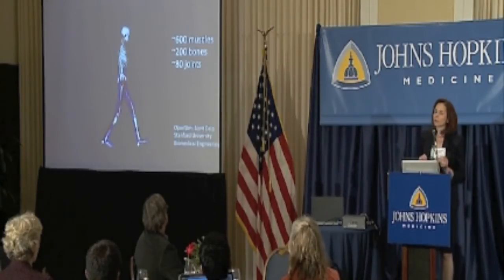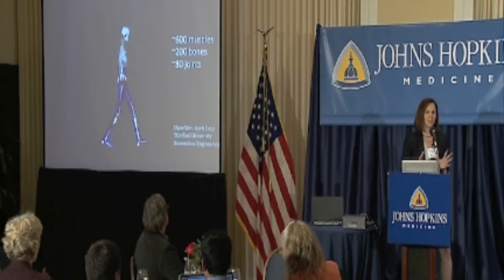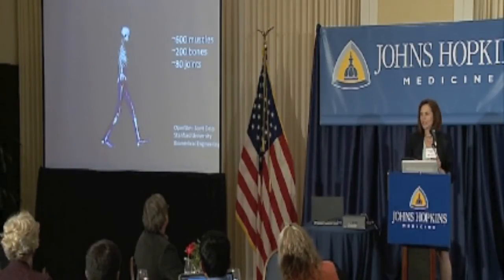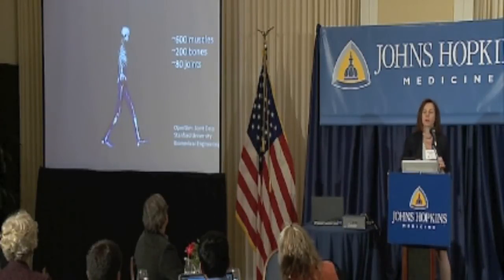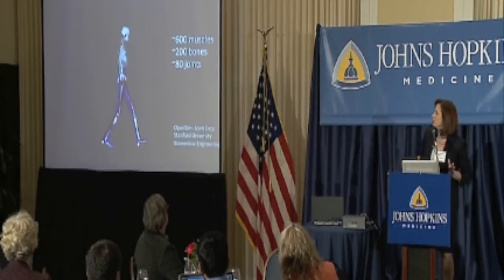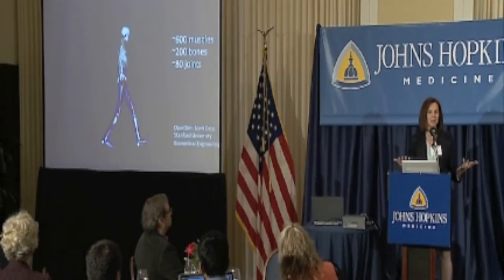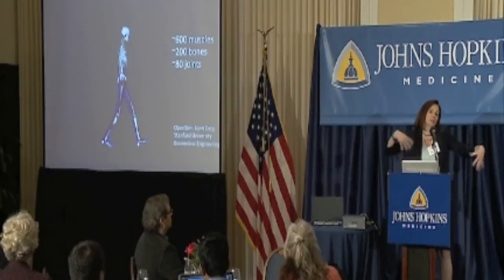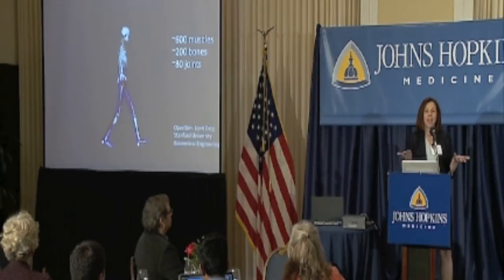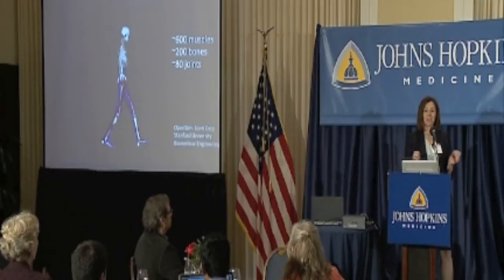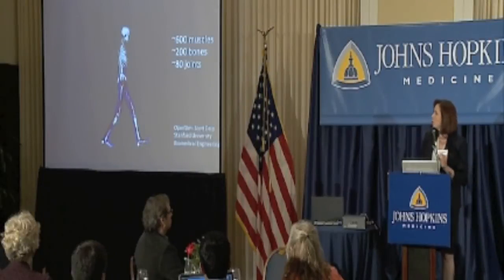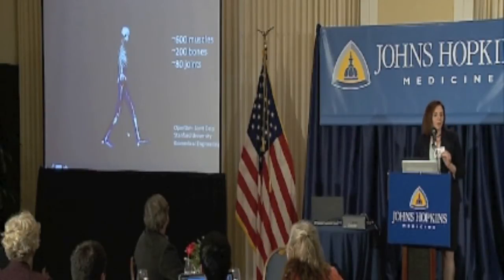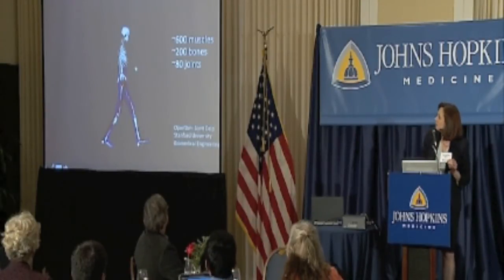I want you to appreciate how complicated the system really is. I'm going to play an animation from my colleague at Stanford, Scott Delp, who's done a lovely job of animating muscle activity in the lower limbs. You have 600 muscles in your body, a couple hundred bones, 80 joints with lots of degrees of freedom — and you control this without thinking about any of those muscles. You can do amazing things, amazing dexterity, and you can walk without even thinking about it.